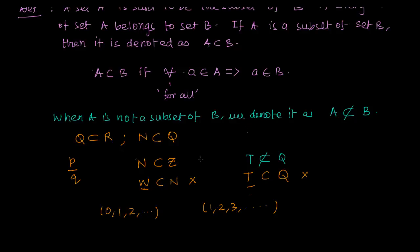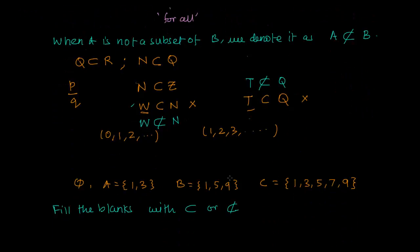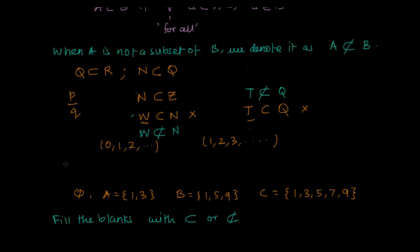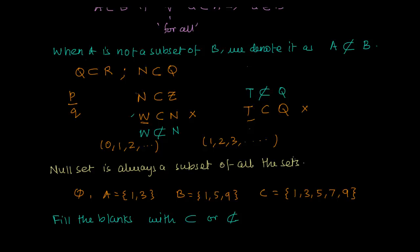We can say that the set of irrational numbers T is not a subset of rationals Q, and similarly the set of whole numbers is not a subset of natural numbers. Also, the null set is always considered a subset of all sets — null set is a subset of every set.